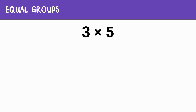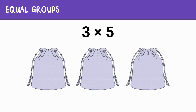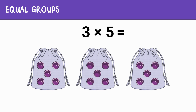Let's try another multiplication problem using equal groups. We'll use equal groups to solve three times five. Imagine you have three bags of marbles and each bag contains five marbles. To find out how many marbles you have in total, we can think of it as making equal groups. Let's fill each of the three bags with five marbles — five in the first bag, five in the second, and five in the third. We multiply three groups of five, so three times five gives us 15 marbles altogether. That's the magic of using equal groups — it helps us quickly figure out how many items we have when they're organized in groups.